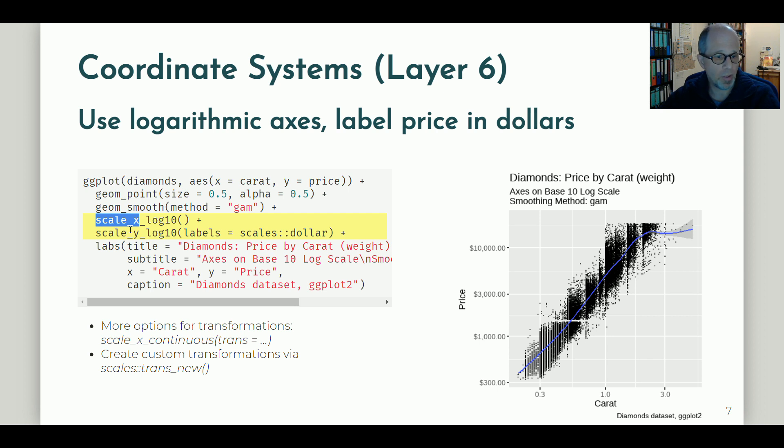There are more options for transformations. If you don't find a convenience function like this for the type of transformation that you want to apply, you can use the scale_x_continuous function or for the y-axis for that matter and use the trans parameter to specify a different type of transformation. And if you don't find your desired transformation there, you can even create custom transformations using the scales package and the trans_new function that I have indicated here at the bottom left of the slide.